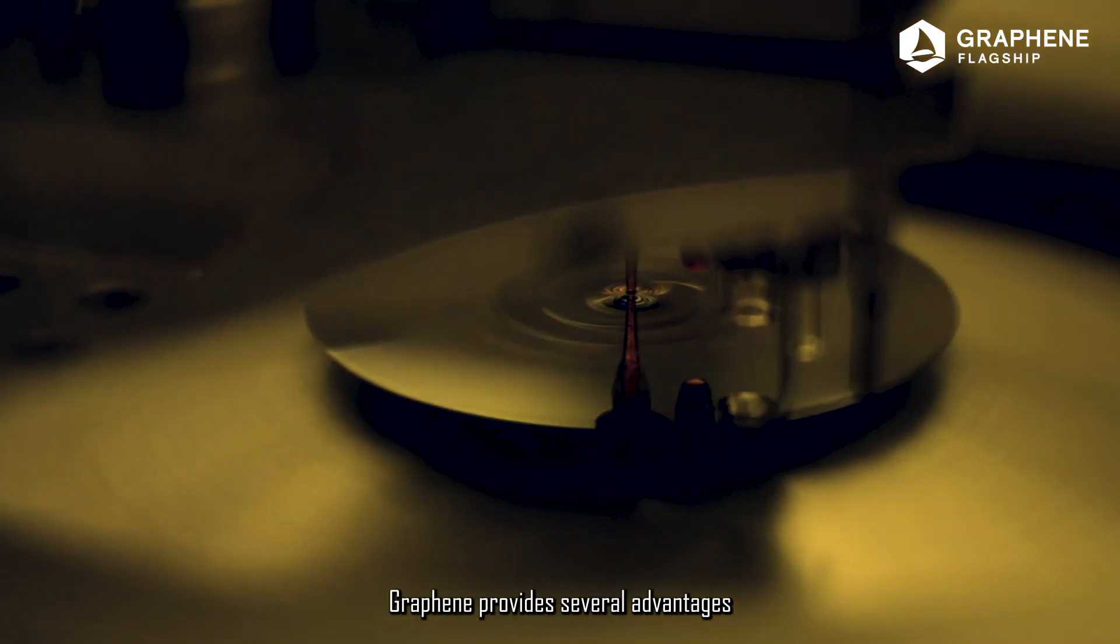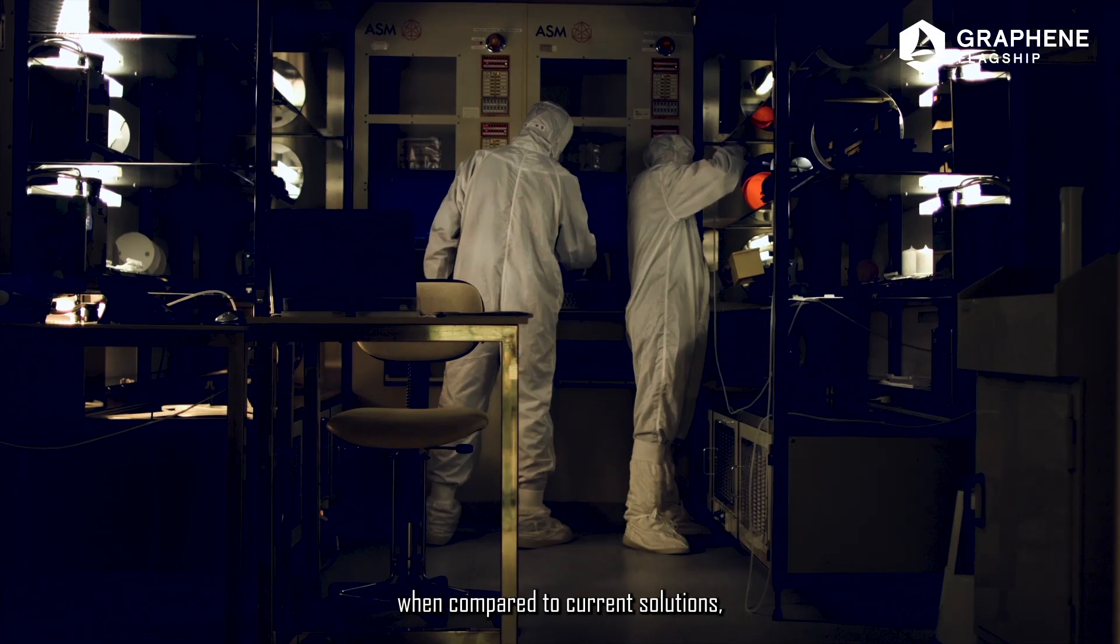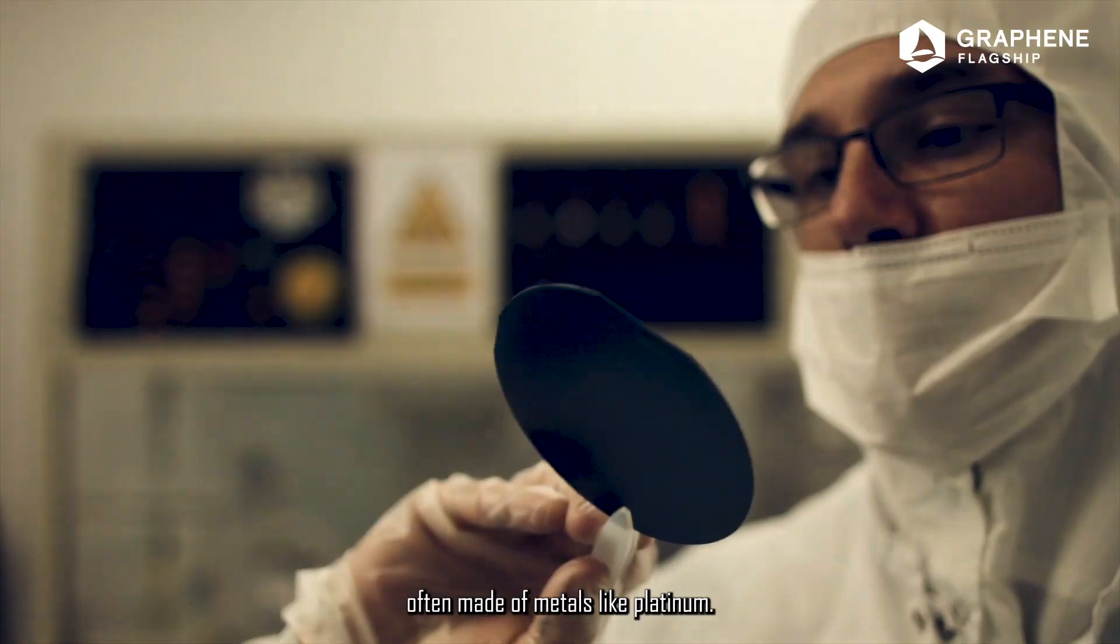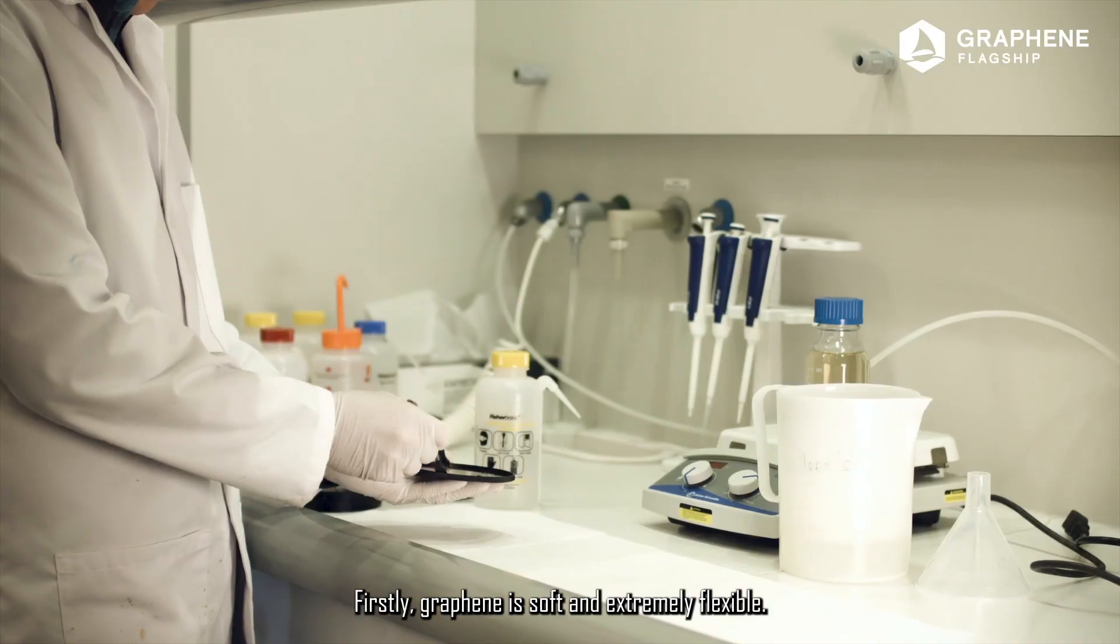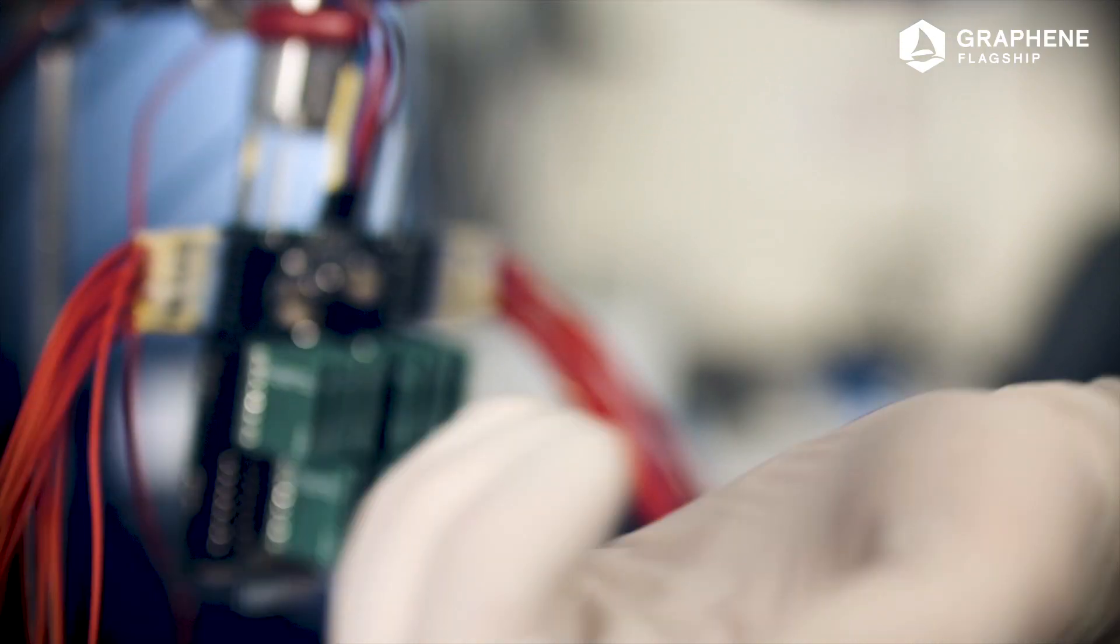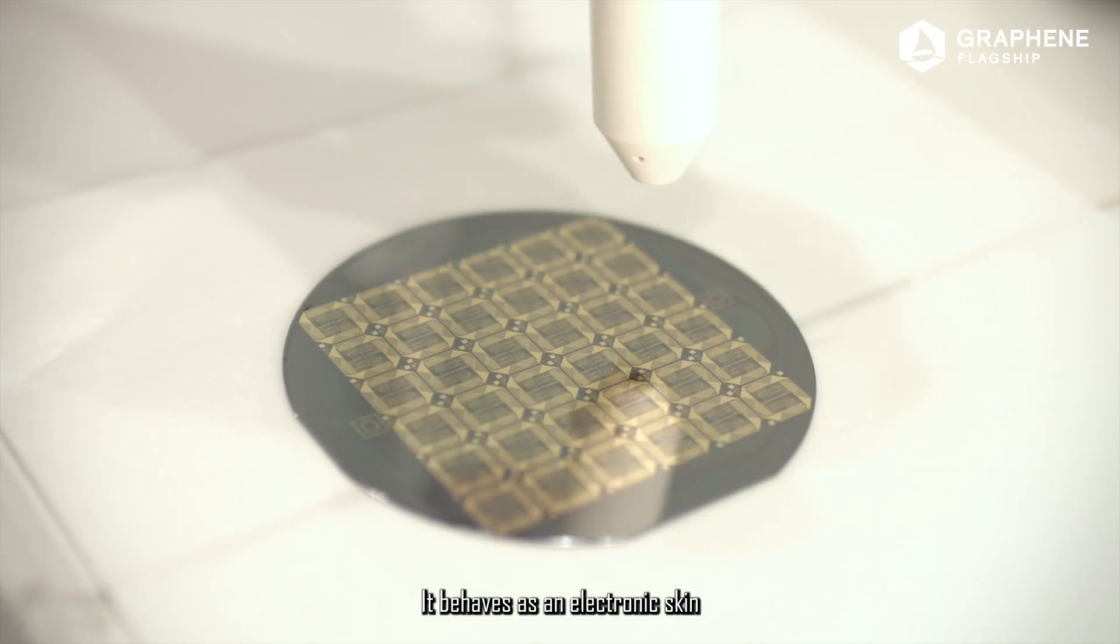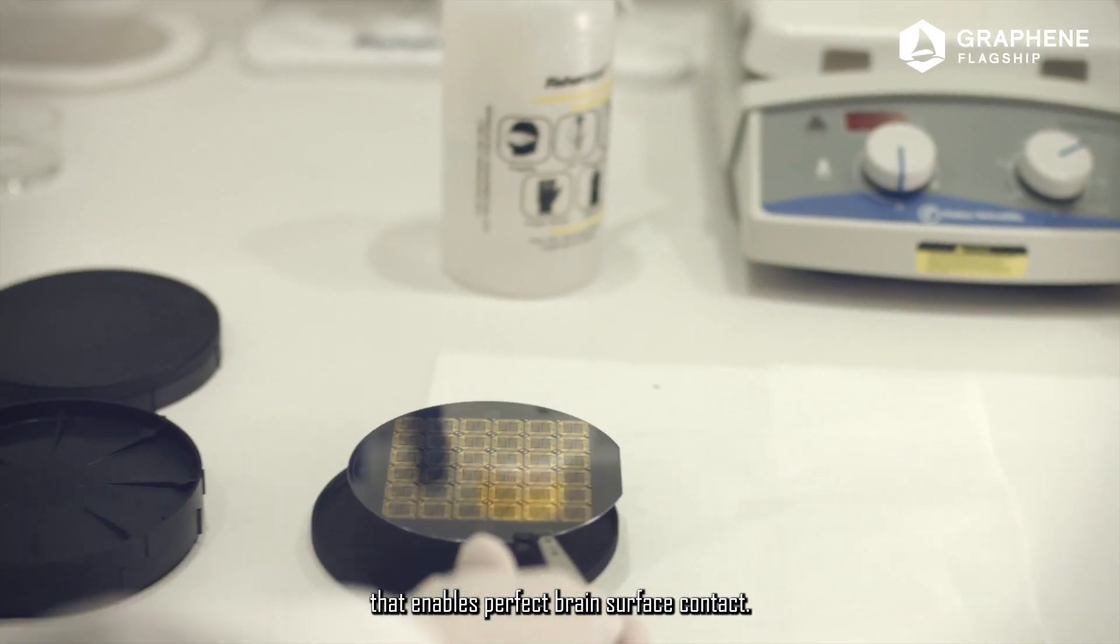Graphene provides several advantages when compared to current solutions, often made of metals like platinum. Firstly, graphene is soft and extremely flexible. It behaves as an electronic skin that enables perfect brain surface contact.